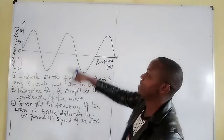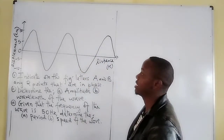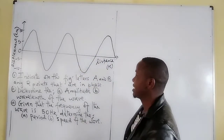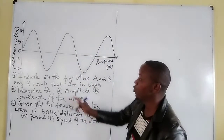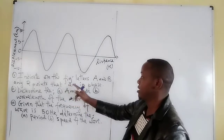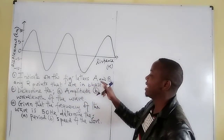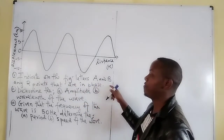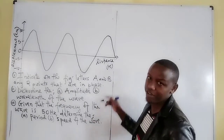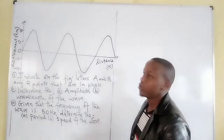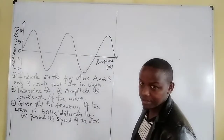The vertical displacement is given in centimeters. We are told to indicate on the figure with letters A and B any two points that are in phase — what we call points in phase.